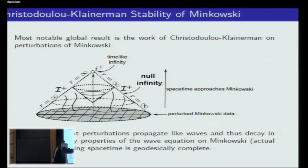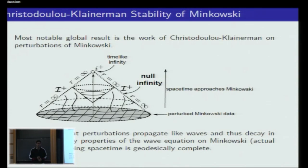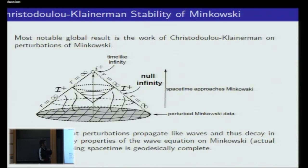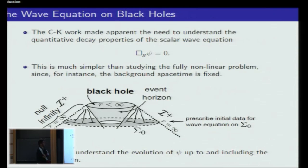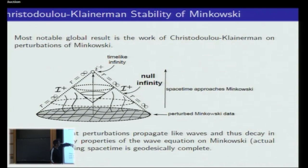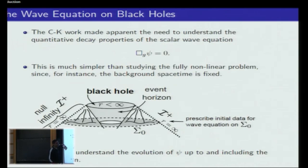Of course, you have to understand exactly what kind of fall-off conditions you need at infinity; these conditions are not trivial, and you don't just consider compactly supported perturbations. What kind of decay you will have is highly non-trivial in this problem, and you have to be very specific — because you have the notion of the ADM mass, and this mass depends exactly on the way your data decay. From that work, it was apparent that one of the first things you need to understand is the decay properties of the wave equation.